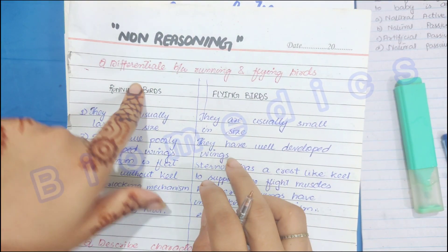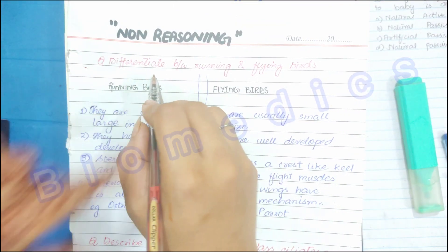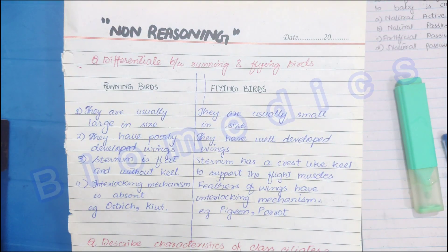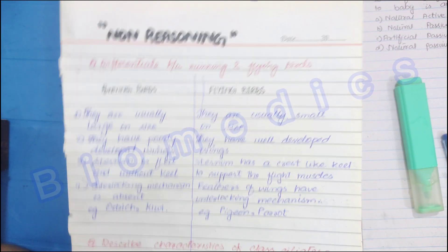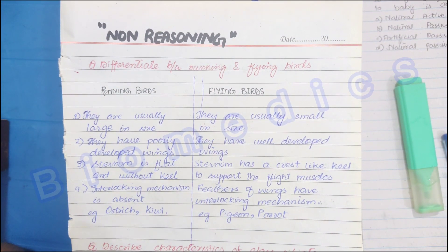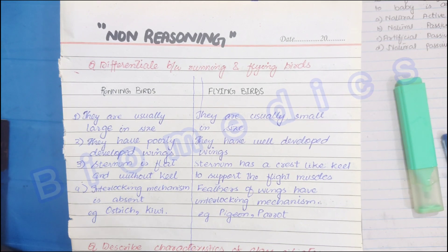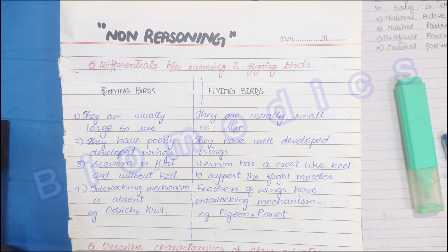The first question is: differentiate between flying birds and running birds. We have to tell the differences between running birds and flying birds. Running birds are bigger in size and their weight is very heavy.